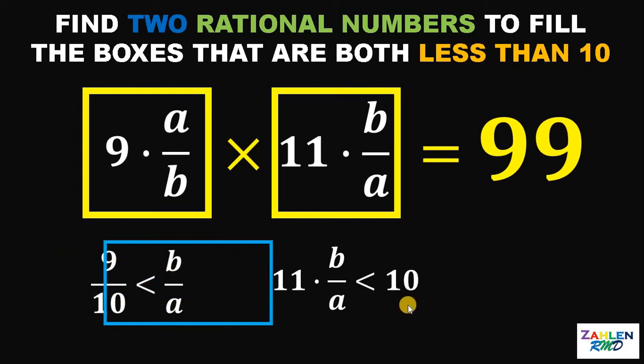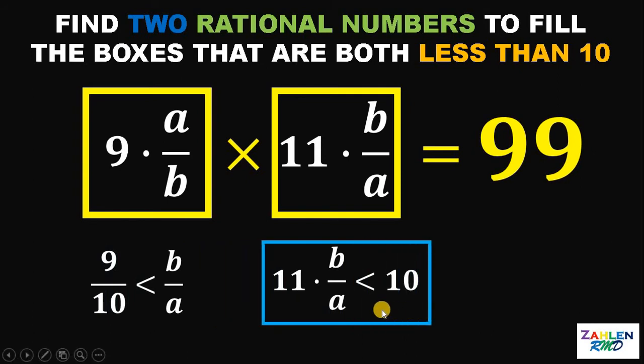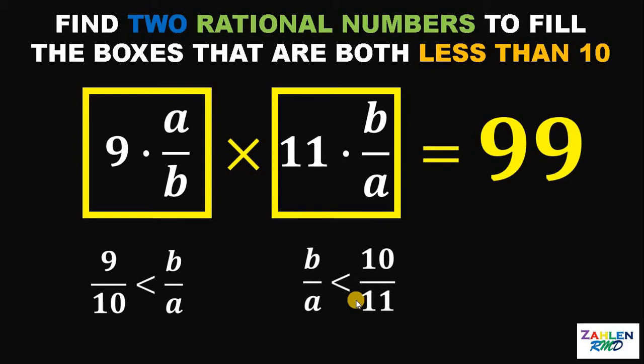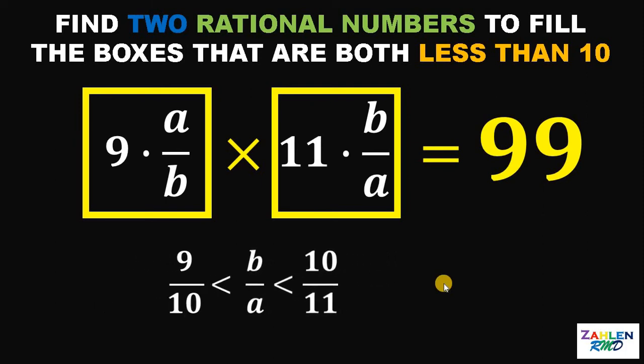How about the second inequality? Let's divide both sides by 11. This will give us B over A must be less than 10 over 11. We have two inequalities in terms of B over A, so we can combine them to create a compound inequality like this. So this says that B over A must be greater than 9 over 10, but it is less than 10 over 11.